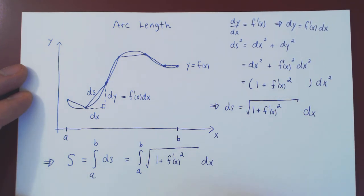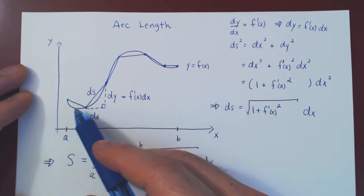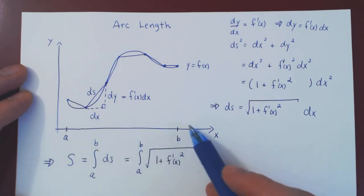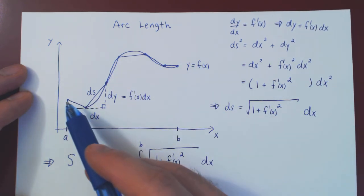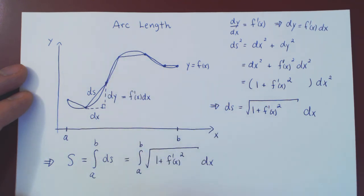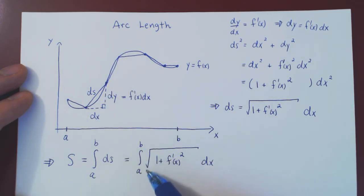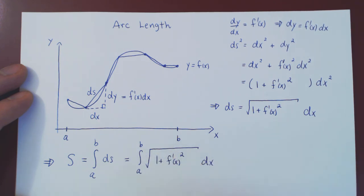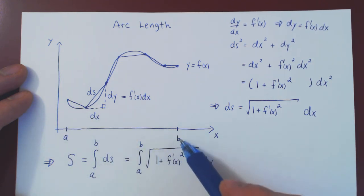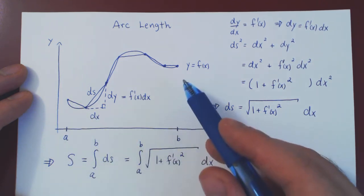So there you have it. If you're given the function y equals f of x between x equals a and x equals b, and you ask how long is the curve traced by this function, the answer is the integral of the square root of one plus your derivative squared with respect to x, as x ranges from a to b.